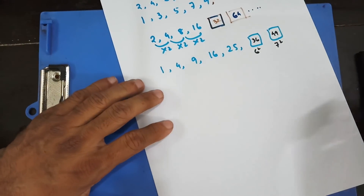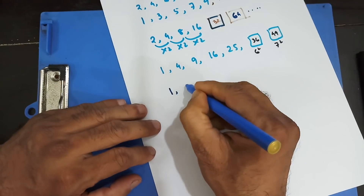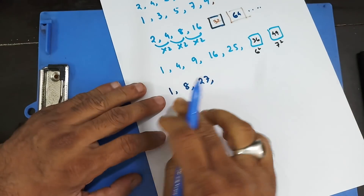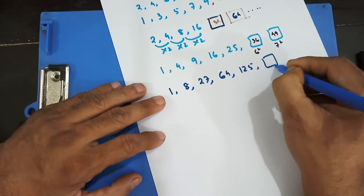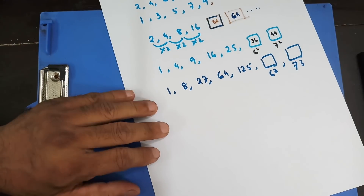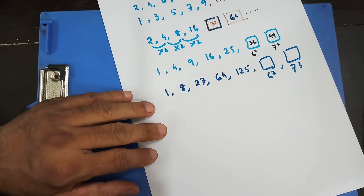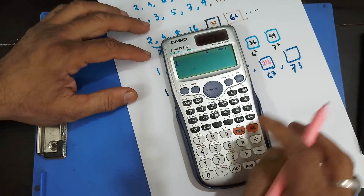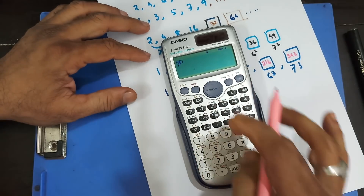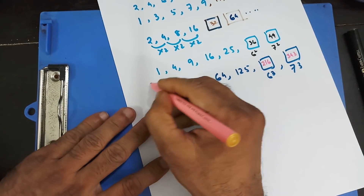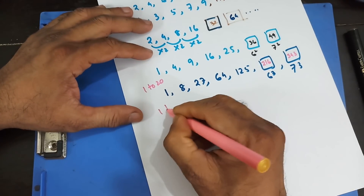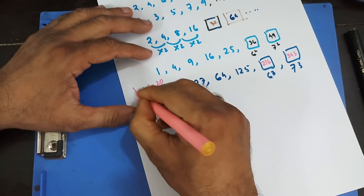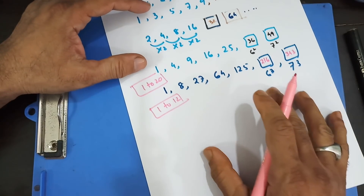One more thing: cube numbers. You might have cube numbers as well — 1, then 8 (which is 2 cubed), then 27 (1 cubed, 2 cubed, 3 cubed), 4 cubed is 64, 5 cubed is 125, and it keeps going on. Then it's going to be 6 cubed, then 7 cubed. 6 cubed is 216 — if you're not sure, use your calculator. Then 7 cubed is 343. You should know all square numbers from 1 to 20, and cube numbers from 1 to about 12. When you know that, you'll become more confident and you can do much more.